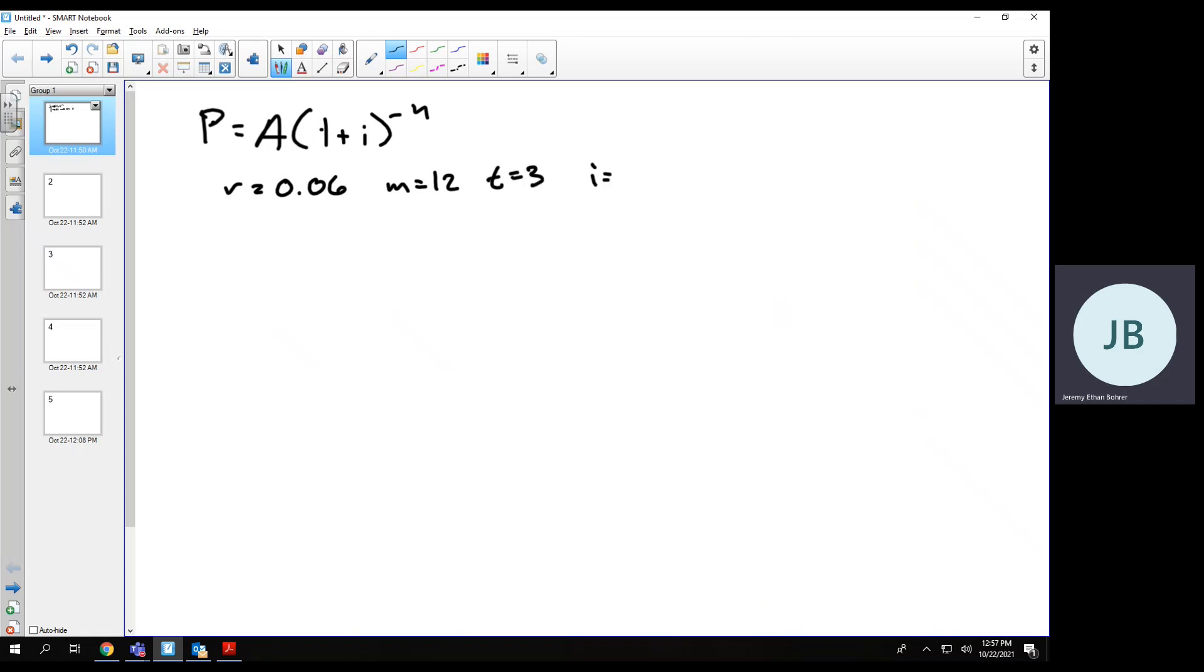So i is r over m, and that's 0.06 over 12. And n is going to be m times t, so that's 36.